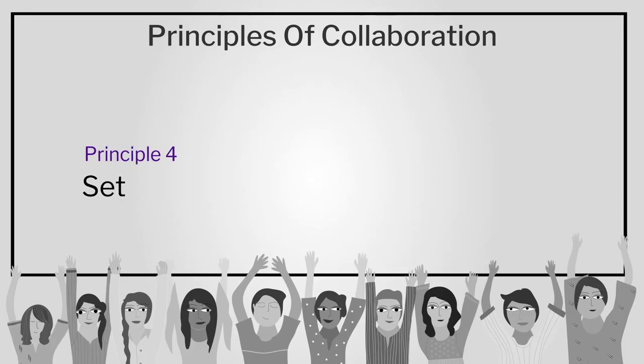The fourth principle is set the rules. Have members agree on norms or a contract which defines each person's role. Have specific remedies for situations in which members do not live up to the agreements. For those who seem incapable of teamwork but whom you cannot do without, you might have to make special arrangements to accommodate them. But this should be the exception, not the norm.